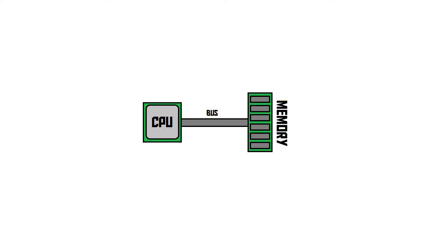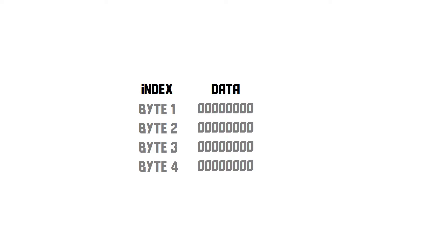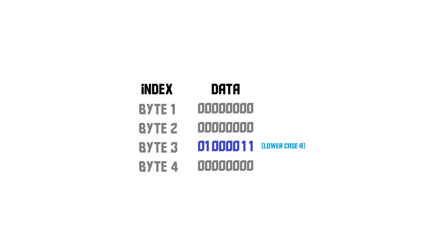Let's say we have a computer that is very, very basic. It has a single CPU connected to a bunch of random access memory, and that RAM consists of only four bytes to keep things simple. At some point — you can see that these bytes are empty, all set to zero — the CPU is going to load a character, the lowercase 'a', into one of the bytes of memory.